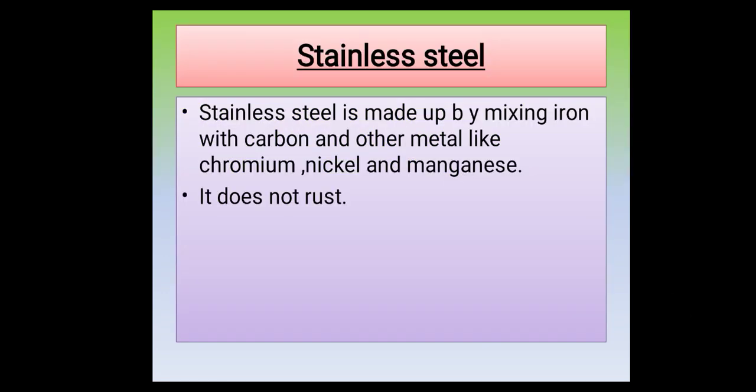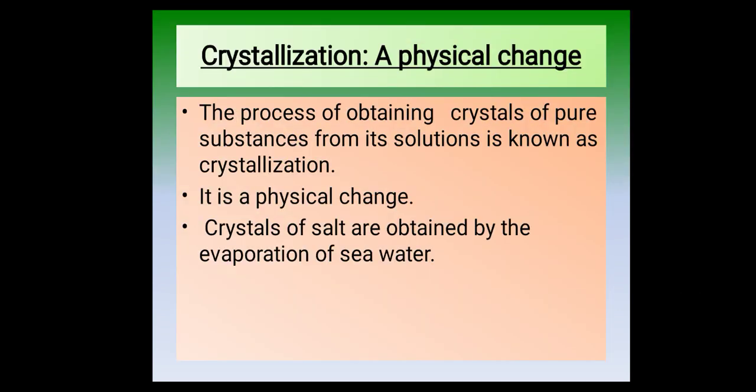Stainless steel is actually made by mixing iron with carbon and some other metals like chromium, nickel, and manganese. We all have seen and used stainless steel objects. Stainless steel does not develop stains and does not rust. That is why it is widely used — because it does not rust easily.